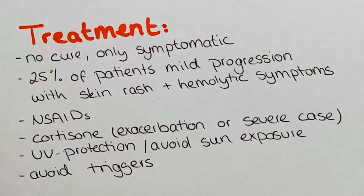Treatment of lupus is only symptomatic. Unfortunately, until today there is no cure. 25% of affected patients present with a rather mild progression, including the characteristic skin rash and hemolytic symptoms. Medications frequently used to help patients alleviate their symptoms are NSAIDs such as aspirin or ibuprofen, which relieve pain and decrease inflammatory processes. In mild forms that might be enough, but other patients also need to take cortisone, especially in exacerbations and severe cases.